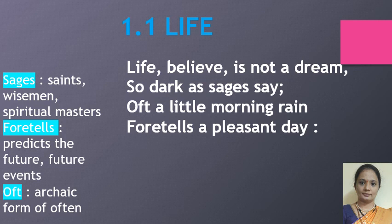Let us get the meaning of the poem line by line. I am dividing the stanza to help you understand each and every line. The first stanza has eight lines: 'Life, believe, is not so dark as sages say; often a little morning rain foretells a pleasant day.' The difficult words: 'sages' means saints, wise men, or spiritual masters. 'Foretells' means to predict about the future or tell about future events. 'Oft' is an archaic word — a short form of 'often' used in ancient times.